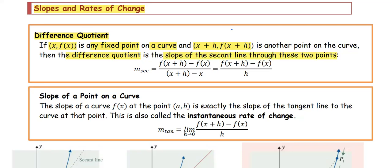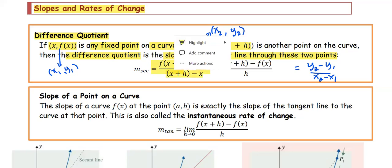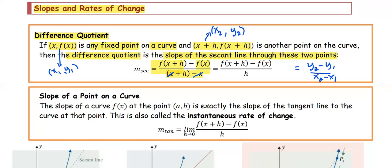We can refer to the slope formula in general, which is y2 minus y1 over x2 minus x1. If we let the first coordinate be x1, y1, then x2, y2 is the same as the coordinate x plus h, f(x+h). After substituting into the slope formula — y2 with f(x+h), y1 with f(x), x2 with x+h, and x1 with x — the denominator simplifies: x plus h minus x, so the x terms cancel. The resulting form is the difference quotient, which equals the slope of the secant line through these two points.